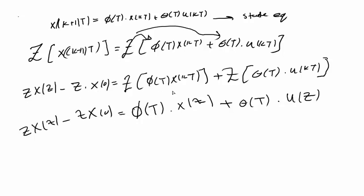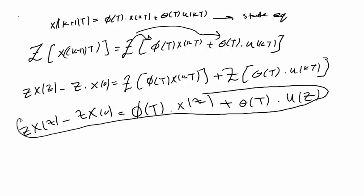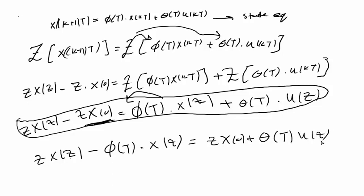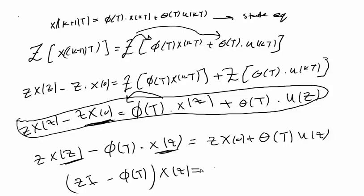We move terms to each side: Z·X(z) minus Θ(T)·X(z) on the left equals Z·X(0) plus Θ(T)·U(z) on the right. Taking X(z) as a common factor on the left, we end up with Z times the identity matrix minus Φ(T), all times X(z), equals Z·X(0) plus Θ(T)·U(z).